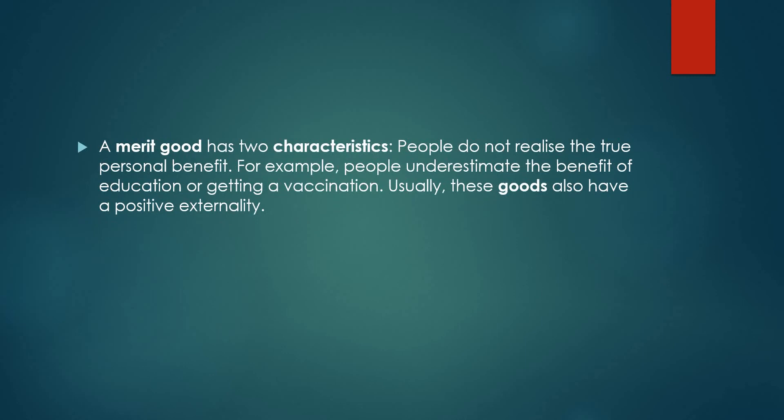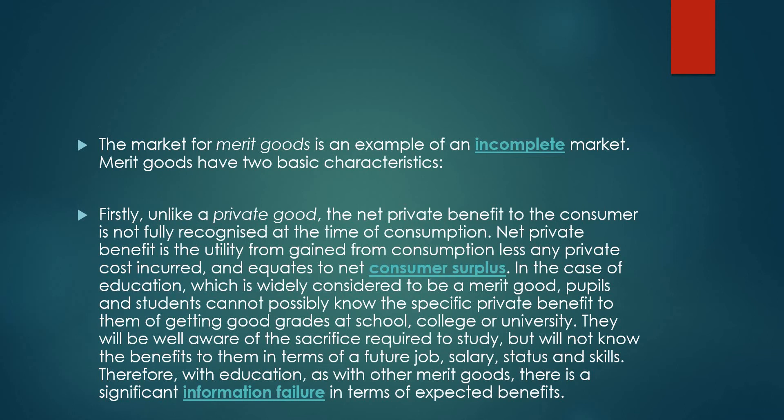A merit good has two characteristics. First, people do not realize the true personal benefit — for example, people underestimate the benefit of education or getting a vaccination. Usually these goods also have a positive externality. Merit goods are also an example of an incomplete market.